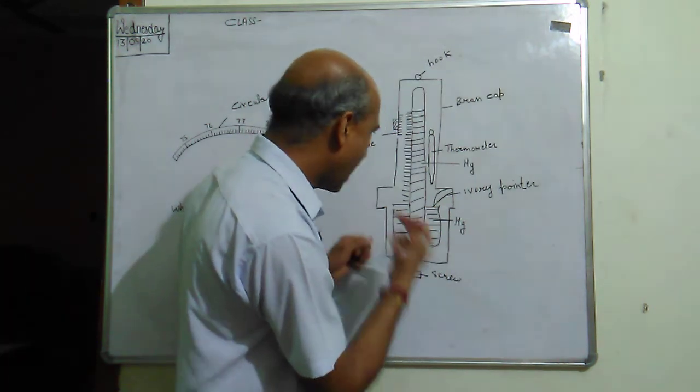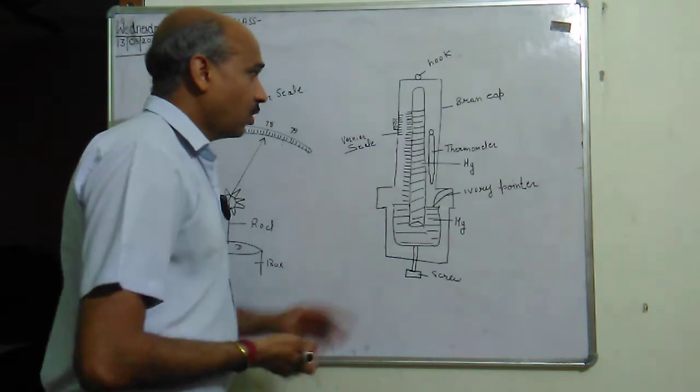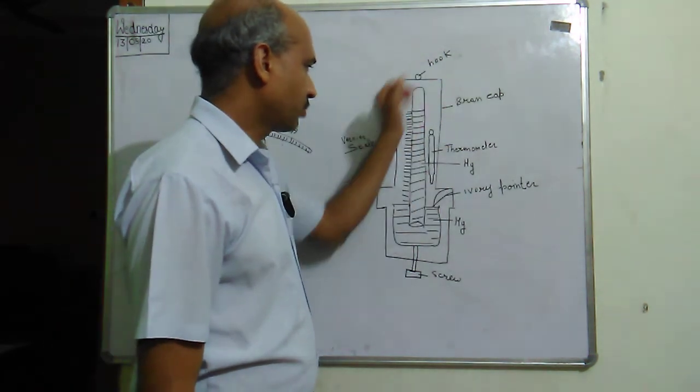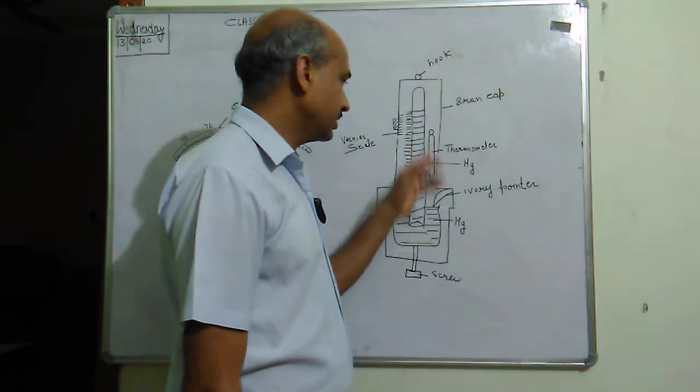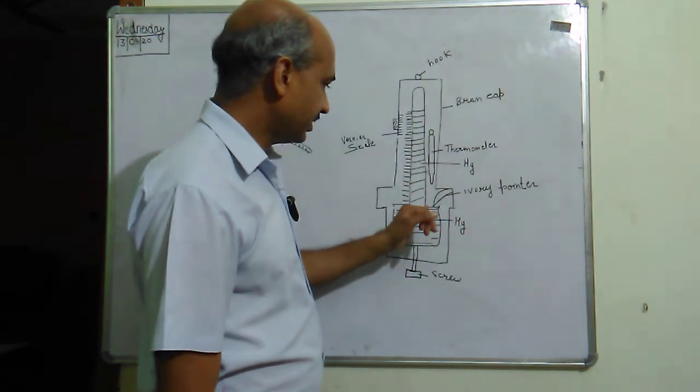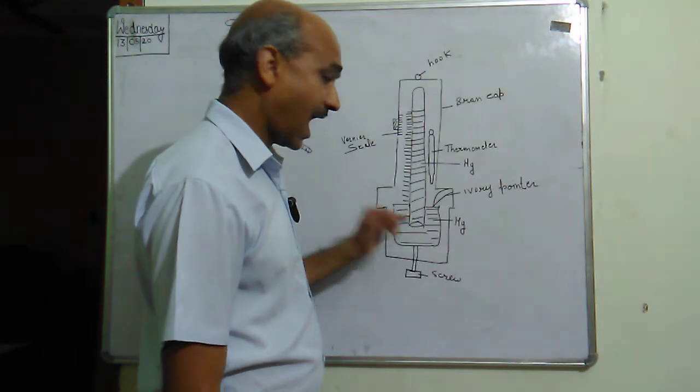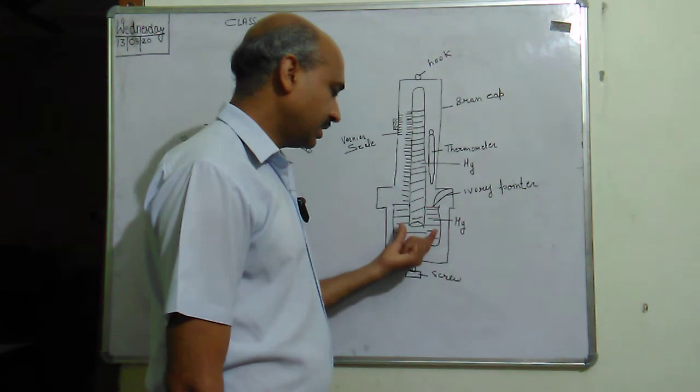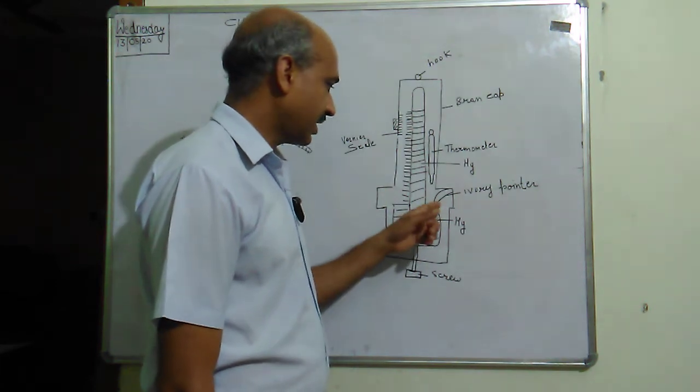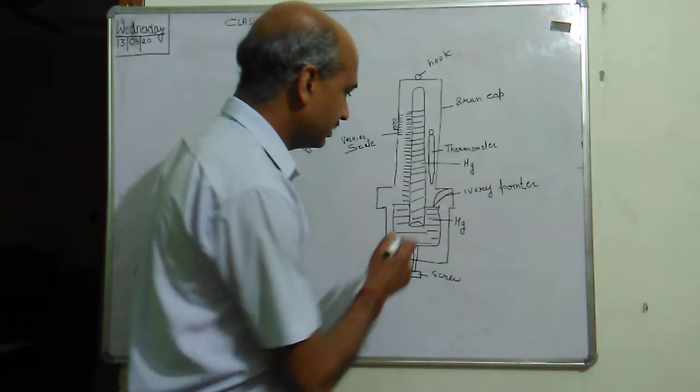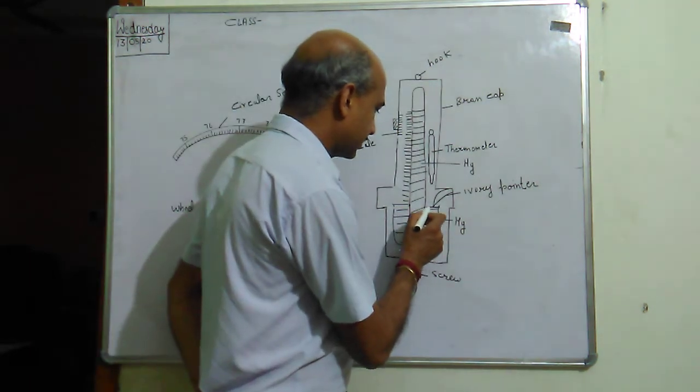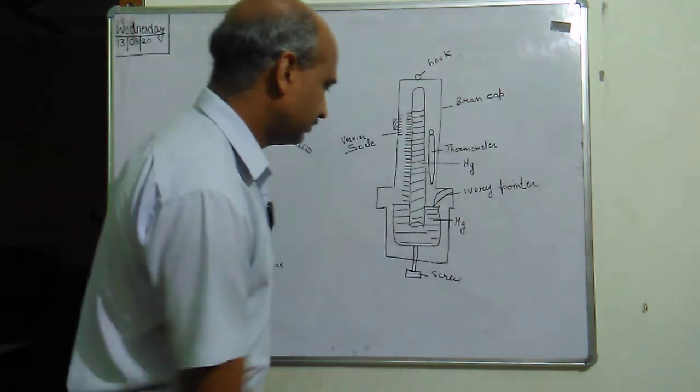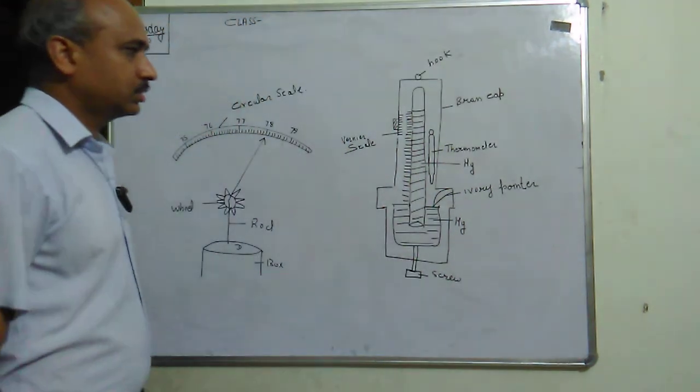So, hook is used for hanging, brass cap provides protection, thermometer records the temperature. We have covered this so impurities won't be added. The screw helps us to adjust the level of the mercury, and the ivory point tells us if the mercury surface touches it properly. We can increase or decrease the level by using this screw.